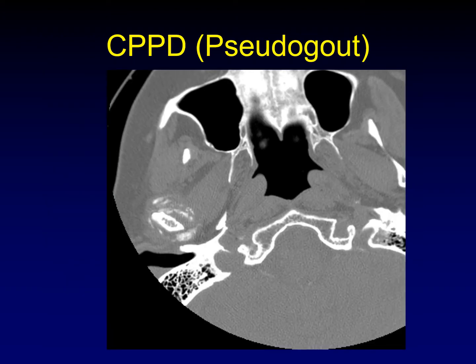In calcium pyrophosphate deposition disease, also known as pseudogout, there is deposition of calcified material throughout the synovial cavity of the joint. This really helps you see how far out the synovium goes around the condylar neck, with extensive, ill-defined, fluffy calcifications characteristic of pseudogout as it appears in other joints.